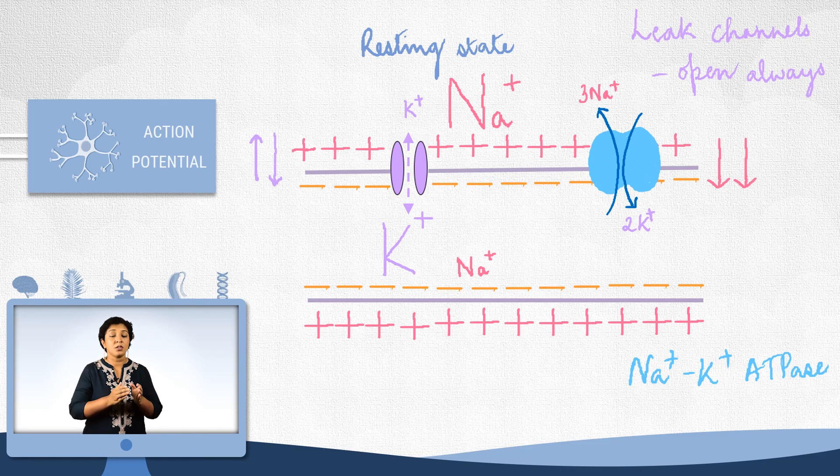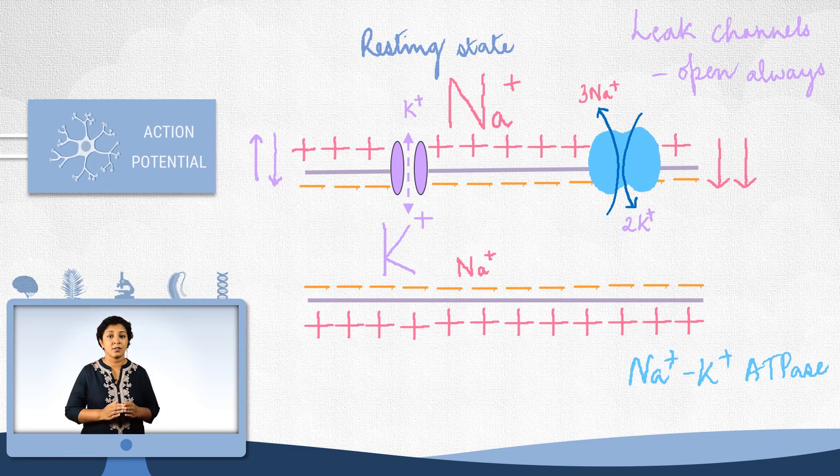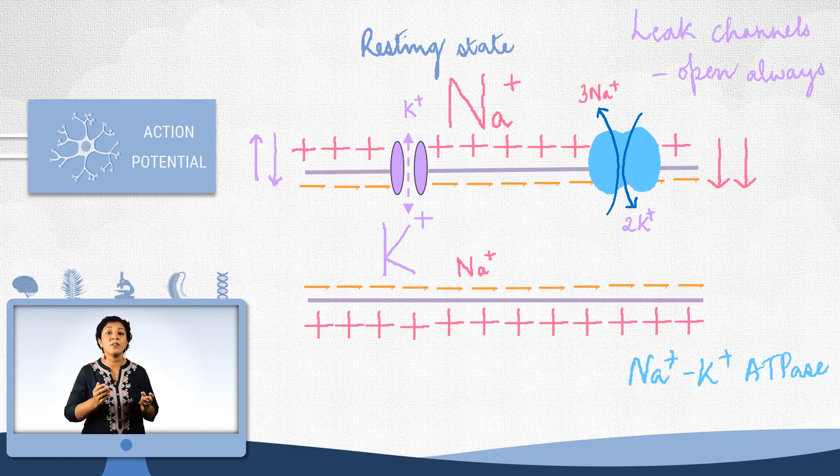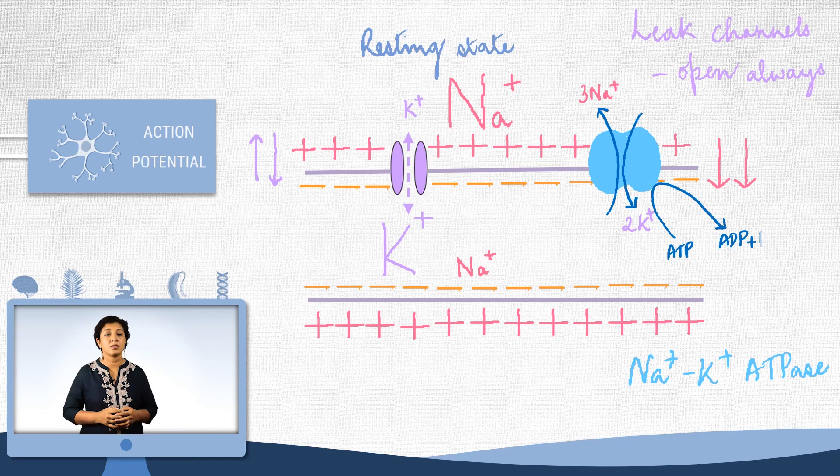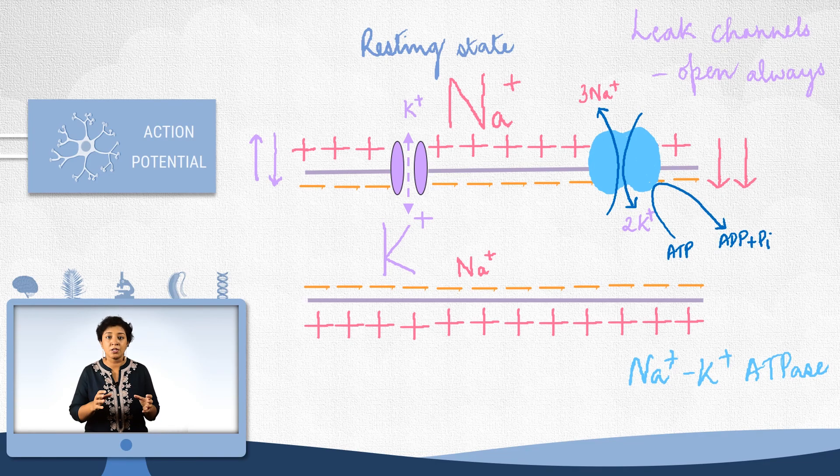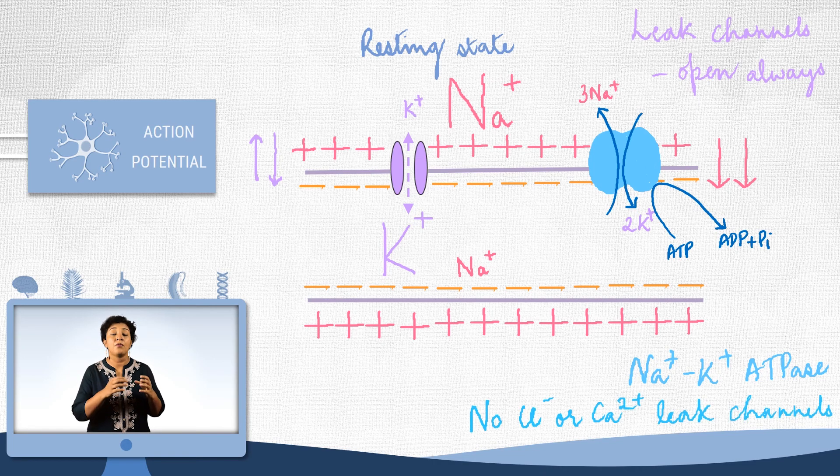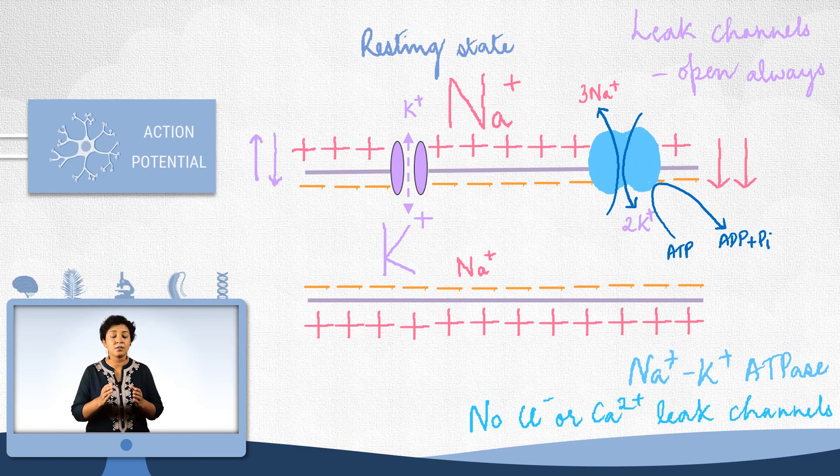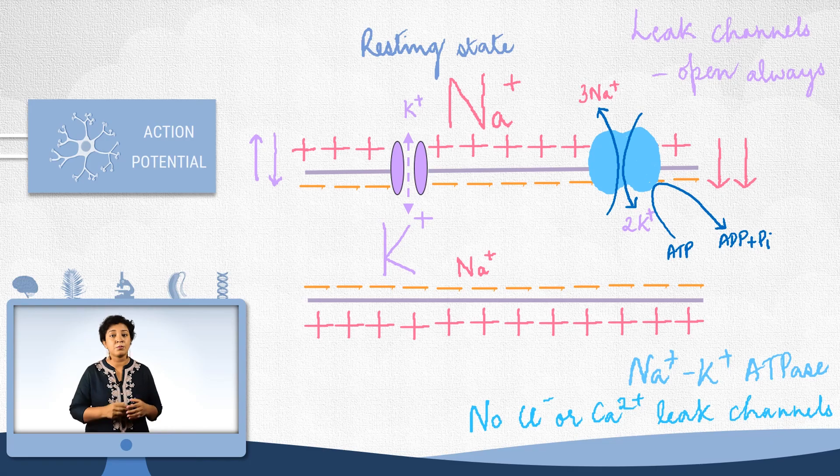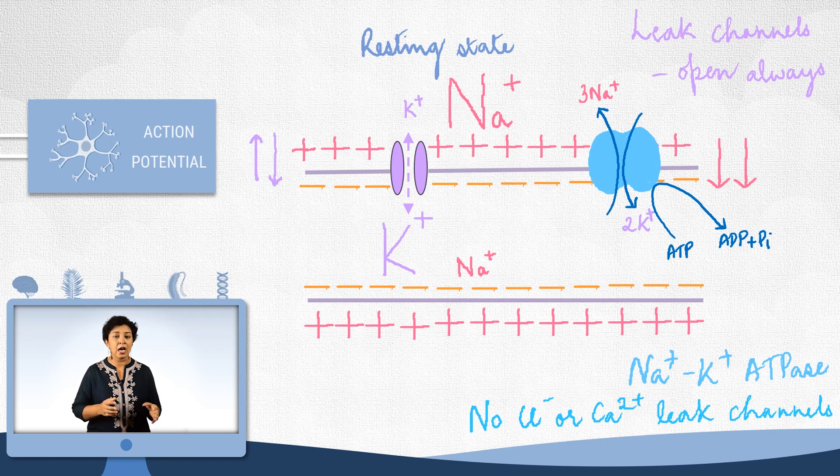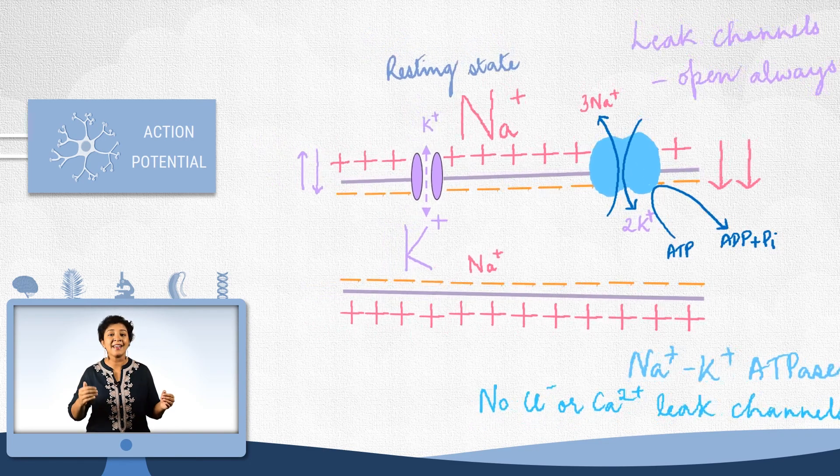Which means this transporter is acting against the gradients. And that requires energy. The energy is obtained from ATP hydrolysis. Now, sodium and potassium are the only two ions that matter in the resting state. This is because no other ions have ion channels or transporters. And therefore, they cannot cross the membrane and do not alter the resting membrane potential. Now, let us see how the membrane potential changes during an action potential.